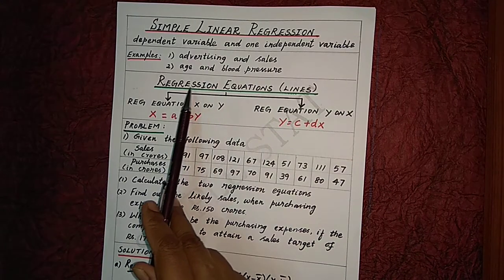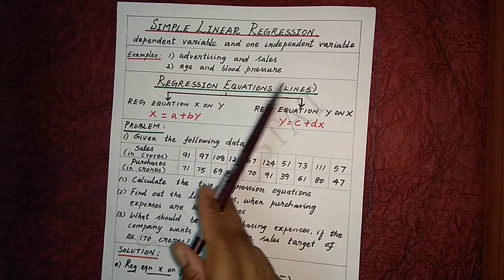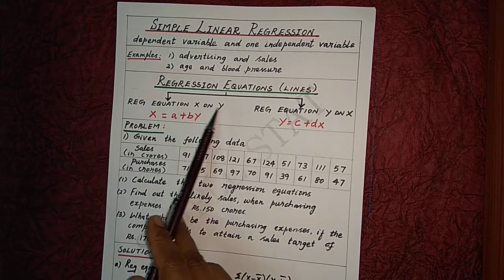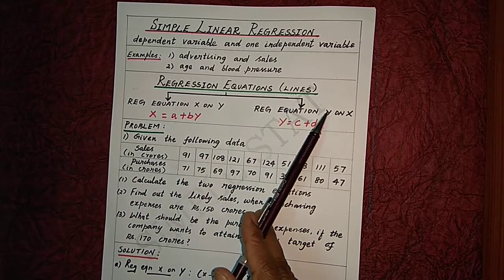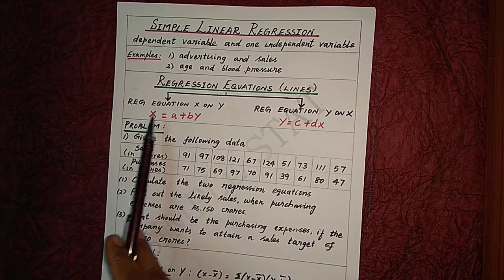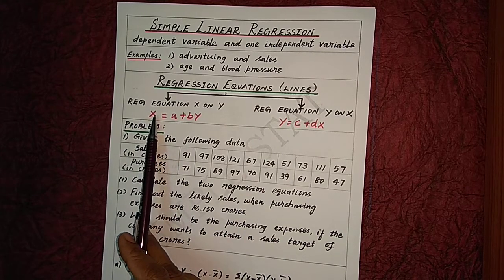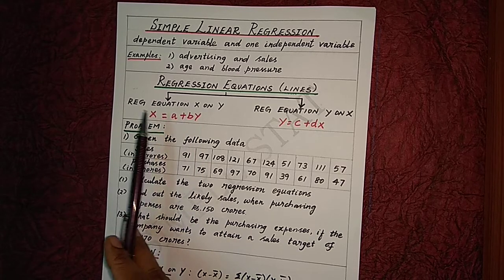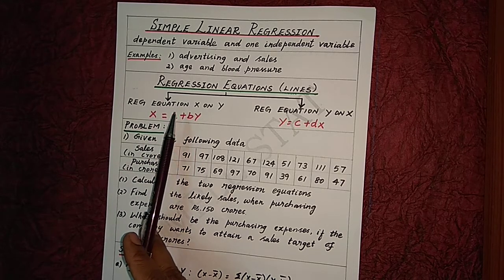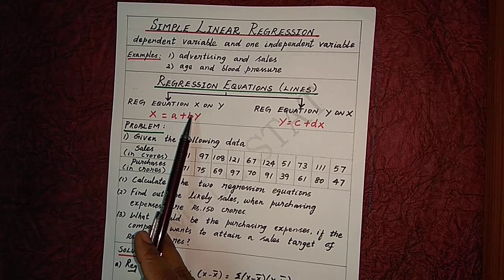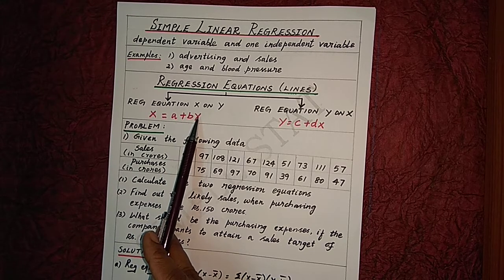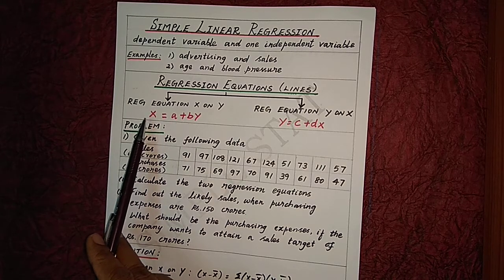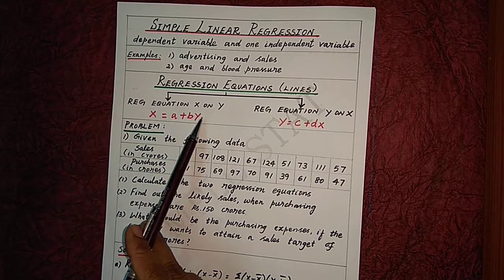In the case of two variables, we have two regression equations, otherwise known as regression lines: the regression equation x on y, and the regression equation y on x. The general form of the regression equation x on y is x = a + by, where x is the dependent variable, a is the x-intercept, b is the slope of the line, and y is the independent variable. This equation gives the most probable values of x for given values of y.